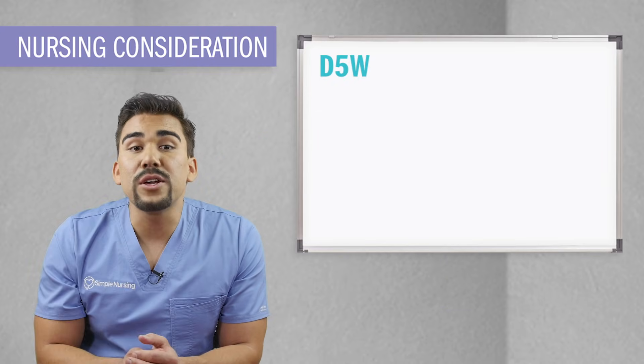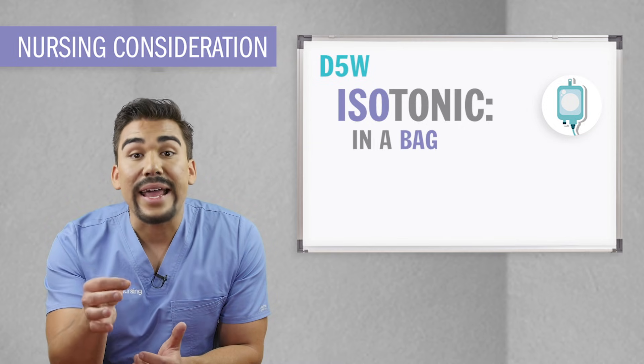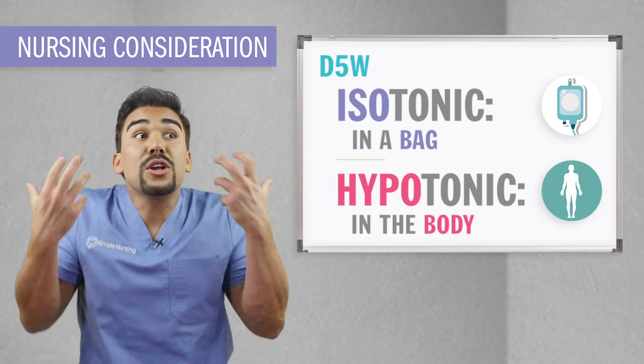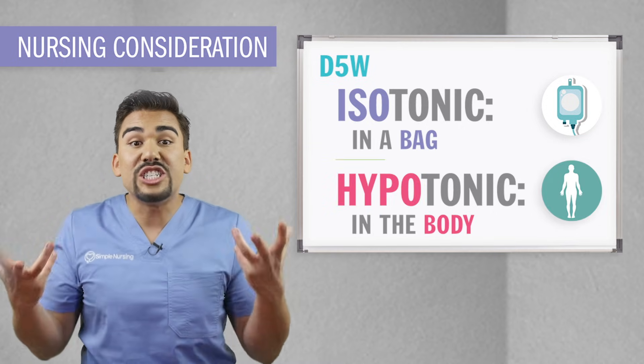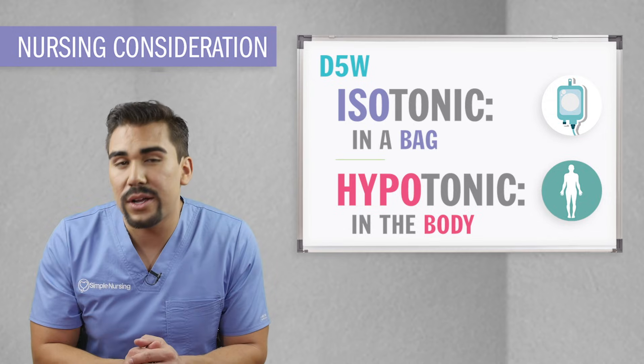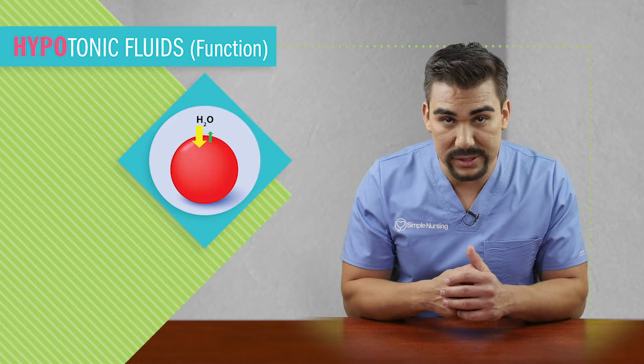D5W is isotonic in the bag and hypotonic in the body. Just understand that sugar is the big culprit here. Inside the bag, the sugar is thick and floating around in there, but once inside the body, the sugar is eaten up by all the cells in your body, and all that's left is our good old fashioned hypotonic fluid.